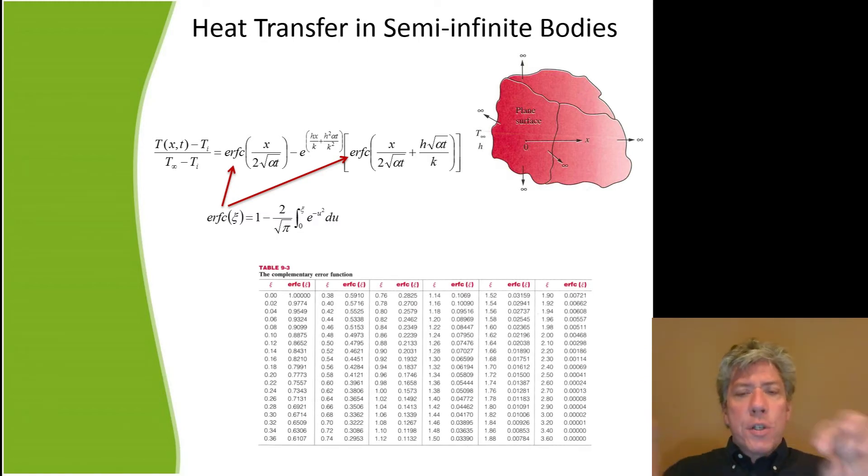So if you know what it is you're trying to put into the error function, well, that's the argument, that's the Xi parameter. And then you just, if you have an Xi of 0.1, just go over and read off the complementary error function of 0.1, and that's 0.8875. So it's really not all that difficult to use. It's kind of like a button on your calculator. But again, here you may have to interpolate.